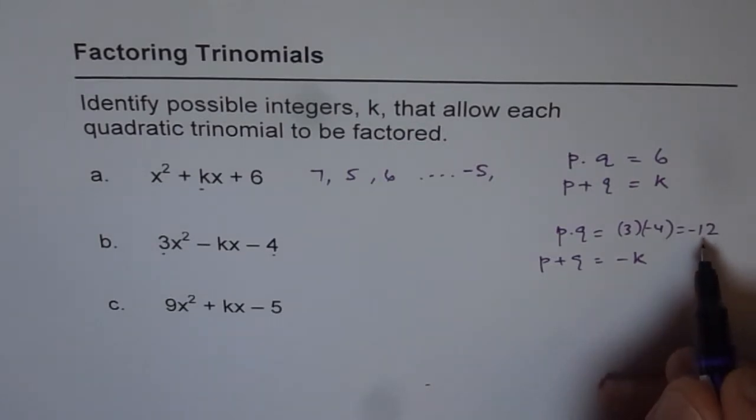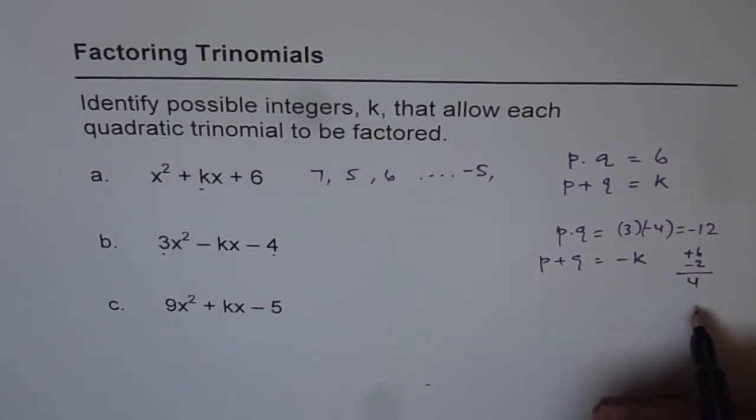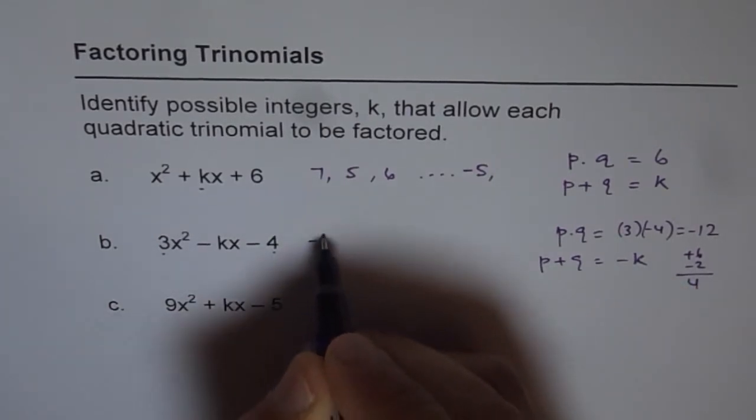So if I have plus 6 and minus 2, and if I add them, I get plus 4. In that case, the k value will be negative of this, minus 4.